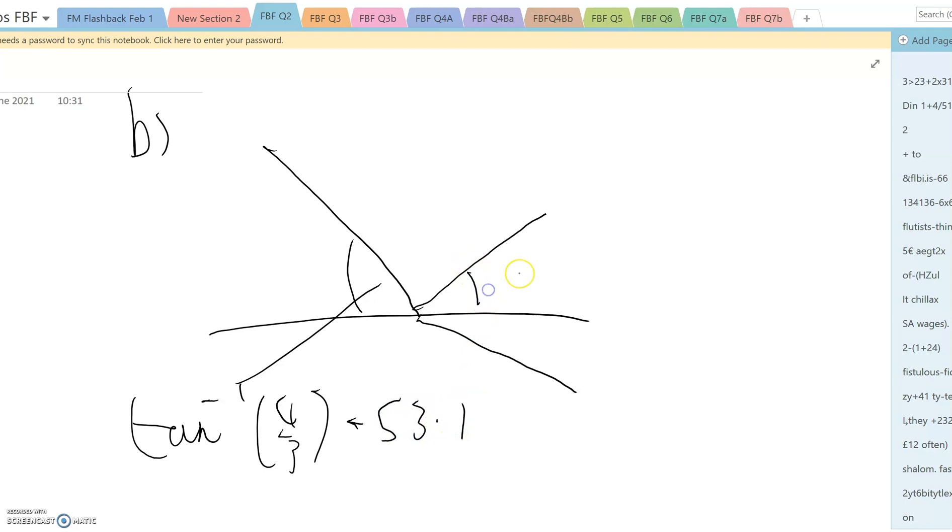And this angle is inverse tan of 1 over 3, which is 18.4.